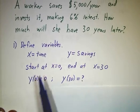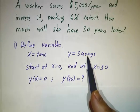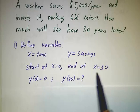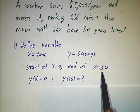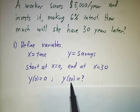First thing is we have to define our variables. So x is going to be time and y is going to be savings. We're going to start at time zero and end 30 years later. And we know that we start with no money in the bank and we wonder how much money is there going to be 30 years later.